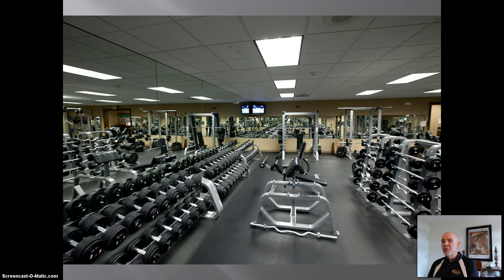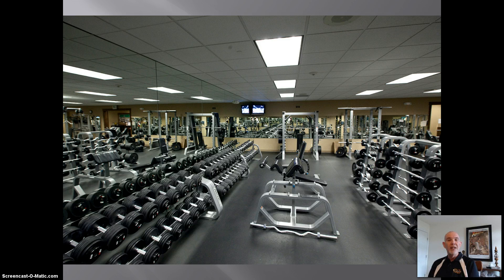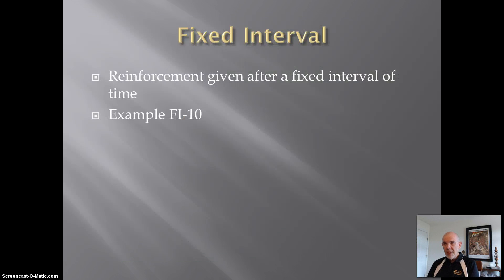Next, coach decides to experiment and provide reinforcement after ten minutes. It doesn't matter how much or how little weight lifting you do during this ten-minute period, but after the time period elapses, if coach sees you lifting weight, he's going to come over and provide encouragement. This is a fixed interval schedule of reinforcement. It's relatively easy to figure out, and it encourages very little behavior until the time interval has expired — probably the least efficient way to provide positive reinforcement. Our example would be called an FI10.